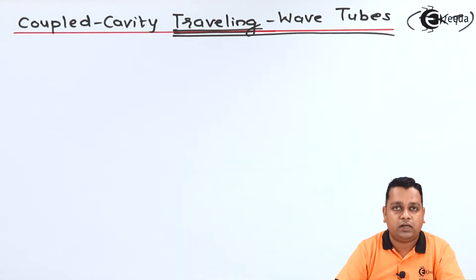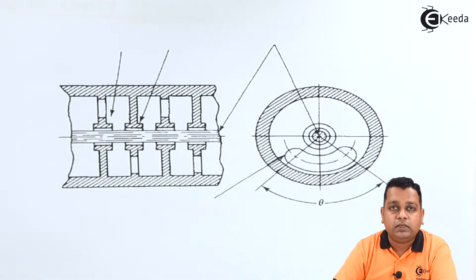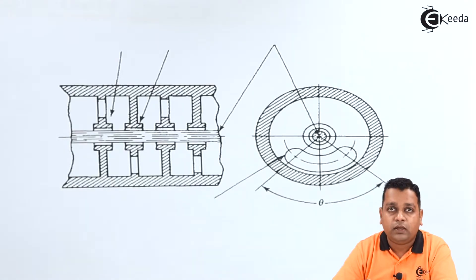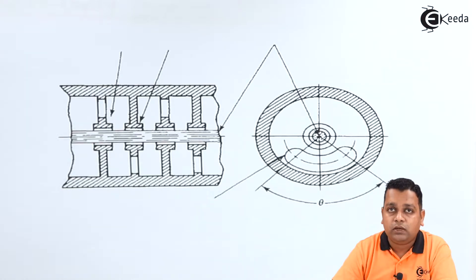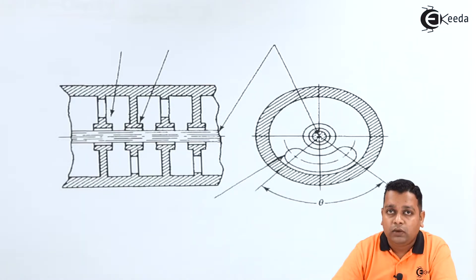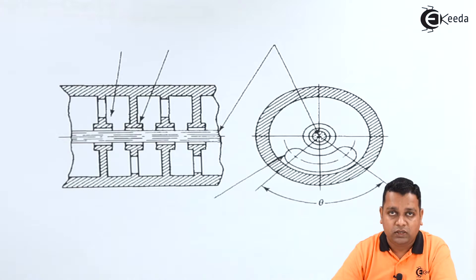Let us introduce two circuitries with which we can have coupled cavities so that high power can be generated. The first circuitry: in the coupled cavity traveling wave tube, a long slot is used that will closely couple the magnetic field associated from one cavity to another cavity.